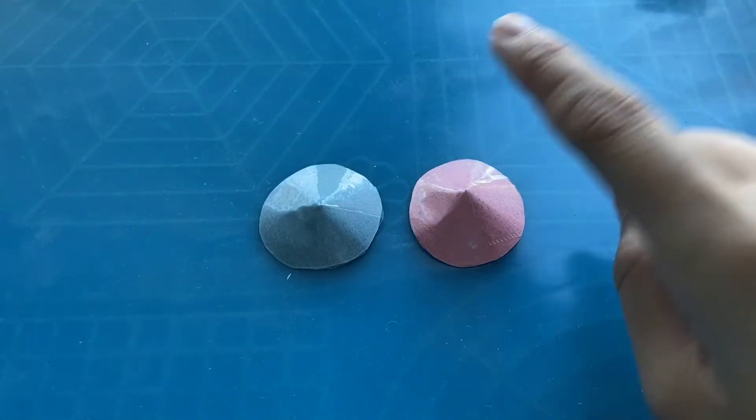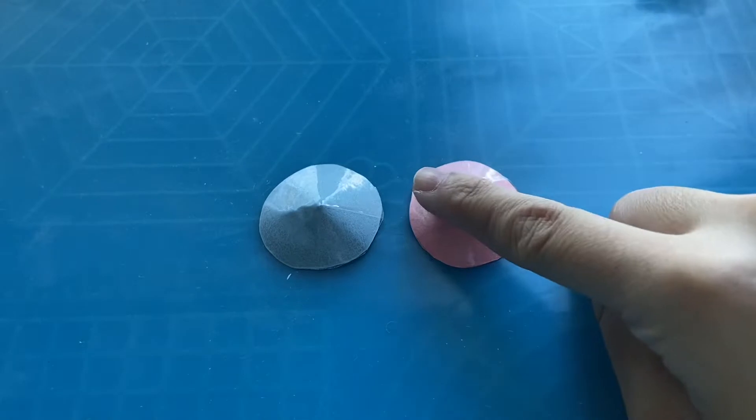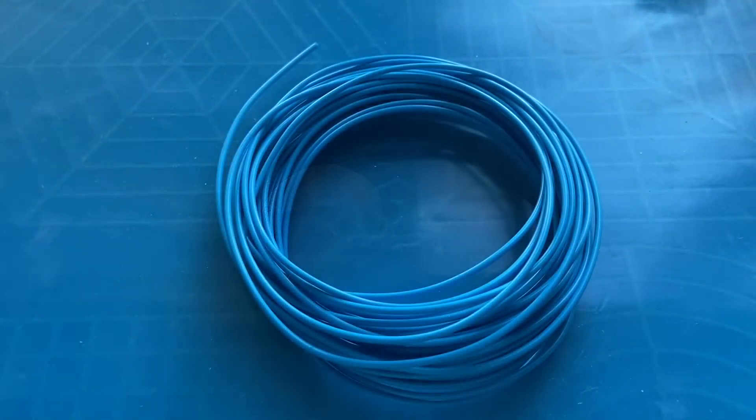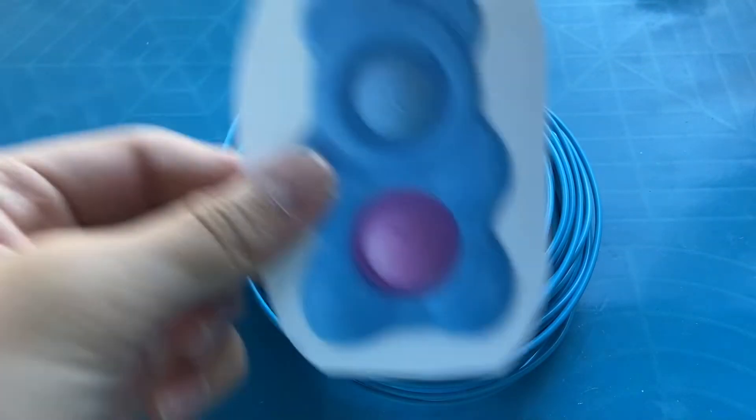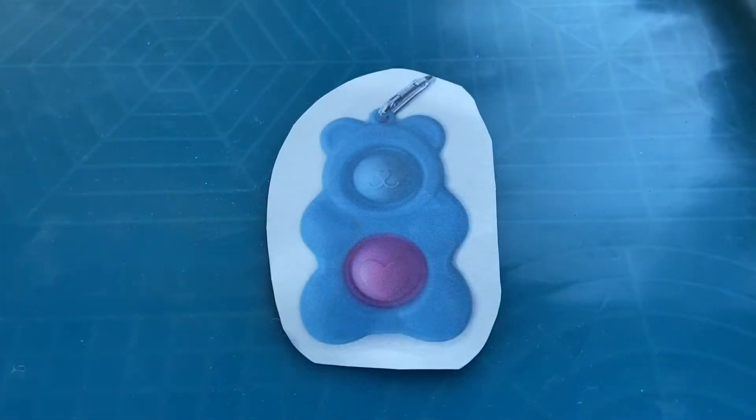And this next part is when you're going to need your 3D pen, so go ahead and go get that. I'm going to be using this blue filament for the outside of the bear. Once you have your pen ready, you're going to want to trace out the bear and make sure you leave the circles open.